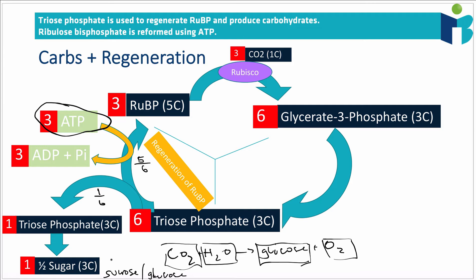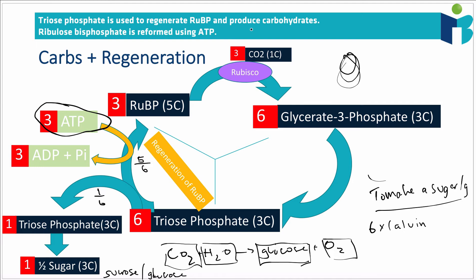To produce a full glucose molecule, the Calvin cycle needs to run six times. In each run of the cycle, three CO2 molecules are fixed, so six runs provide six CO2 molecules and produce 12 triose phosphates in total. One sixth of 12 is two triose phosphate molecules, and combining two three-carbon molecules gives a six-carbon sugar. This illustrates that multiple turns of the Calvin cycle are required to generate a full sugar molecule.